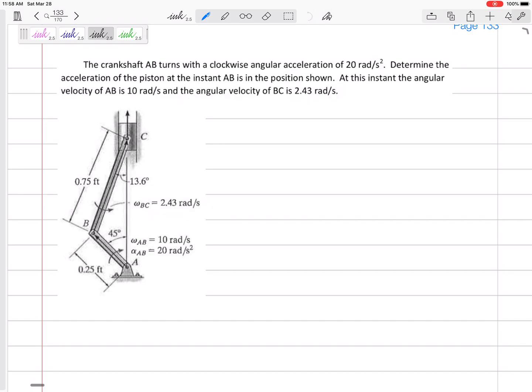So since they gave it to us, we can start right away with our acceleration. We only have one method, the relative acceleration method to say a_C equals a_B plus a_C/B. And this relative term is alpha cross R minus omega squared times R, C slash B.